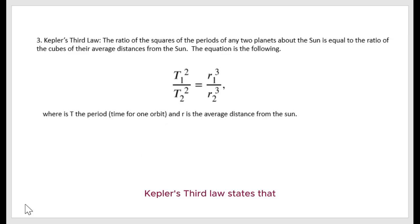Kepler's third law states that the ratio of the squares of the periods of any two planets about the Sun is equal to the ratio of the cubes of their average distances from the Sun. The equation is the following: T₁ squared divided by T₂ squared equals r₁ cubed divided by r₂ cubed.